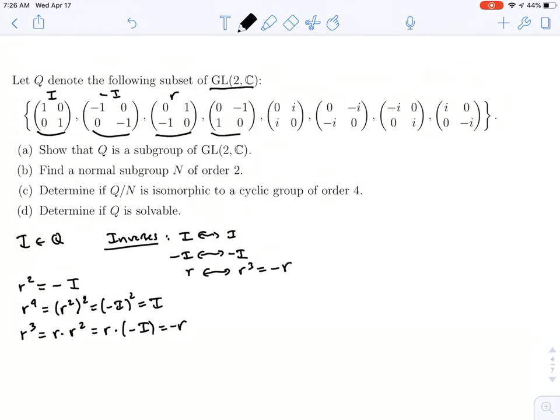So R cubed is negative R. And that's actually the next matrix in our list, right? You just see the 1 turns into a minus 1. Negative 1 turns into a positive 1. That's negative R.